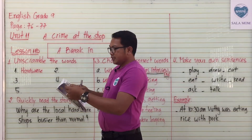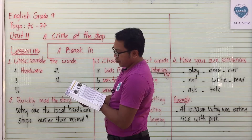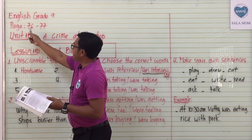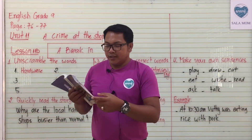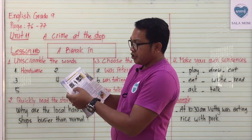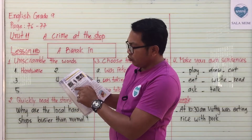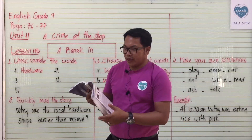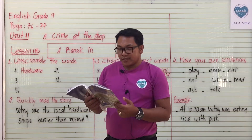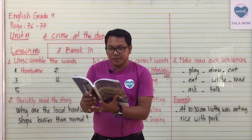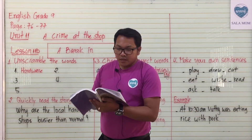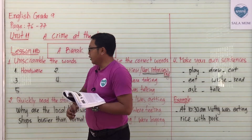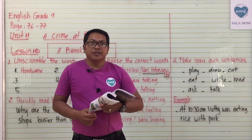Here the words are scrambled, so you need to unscramble them. Please open your book to pages 76 and 77. We have pictures 1 through 5 and the words underneath are scrambled. Make sure you understand — it's a bit hard but try your best. Number one: 'hardware.'